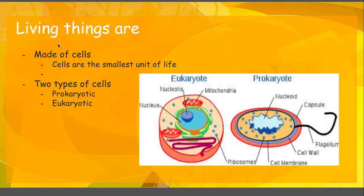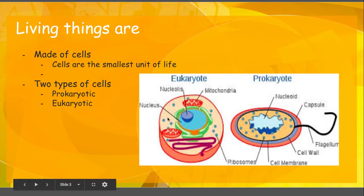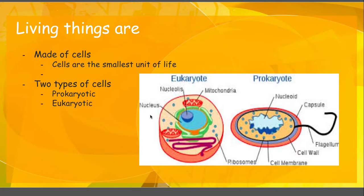If you are smaller than a cell, or you are not made of a whole cell, you're not considered living. We have two types of cells: prokaryotes, which are much smaller and very simple, and eukaryotes, which are larger and much more complex. We'll talk about these types of cells in an upcoming unit. But all living things have cells.